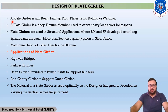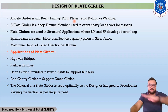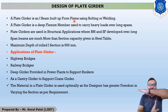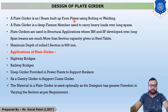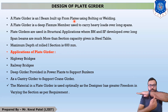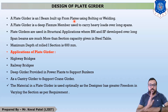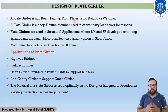A plate girder is an I-section built up from plates. There are basically three plates: a horizontal plate at the top, a vertical plate in the middle, and another horizontal plate at the bottom of the web portion. The top horizontal plate is called the top flange, the vertical plate is the web, and the bottom plate is the bottom flange. The connection between the web and flange is made with the help of bolting, welding, or riveting.